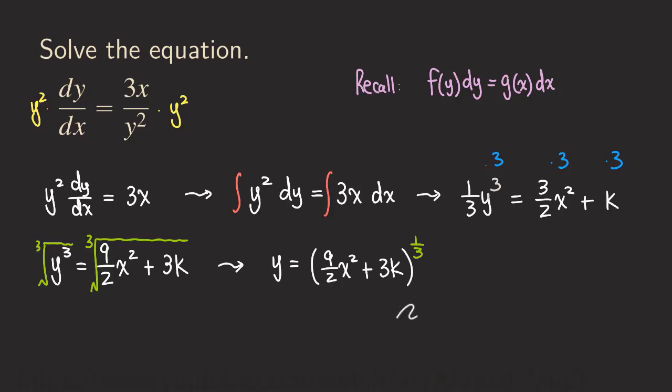To simplify the answer even more, you can simply rewrite this 3k into a C.